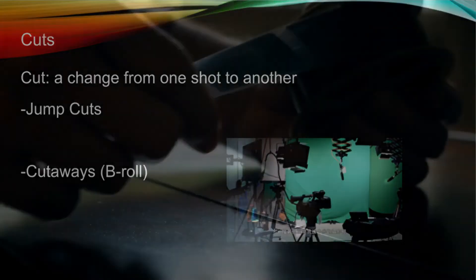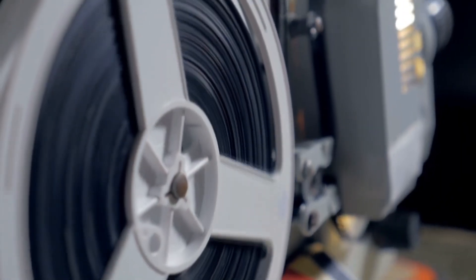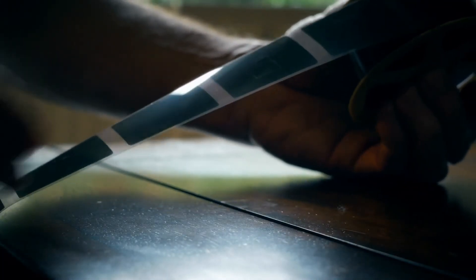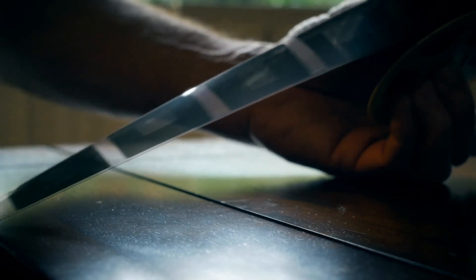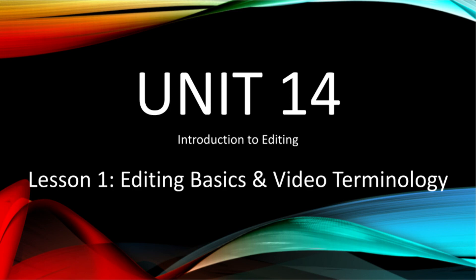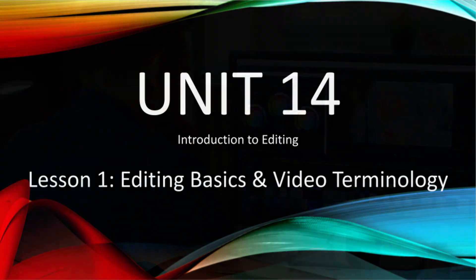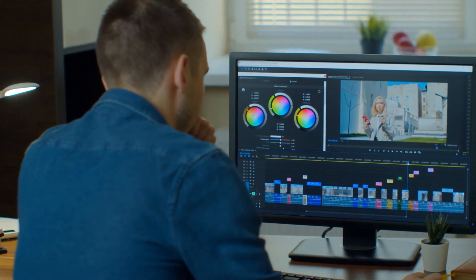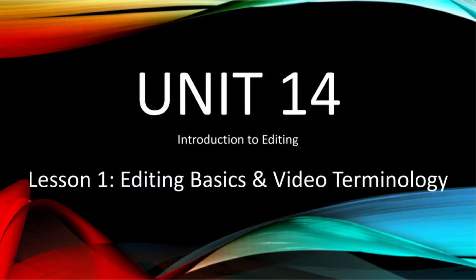A cutaway shot is when you interrupt a continuous shot by inserting a shot of something else. Usually you cut back to the original shot afterwards. This is how b-roll works to help illustrate what we are talking about. There will be more on b-roll in Unit 15. You can also do lots of different transitions in between cuts, but we will get to that later as well. I'm sure all of these terms will get repeated again and again during the rest of the lessons, so don't worry too much if this seems like too much information at once. Now that we have some of the vocabulary, we can talk about actually editing and building your video. I'll see you in the next lesson! Bye!